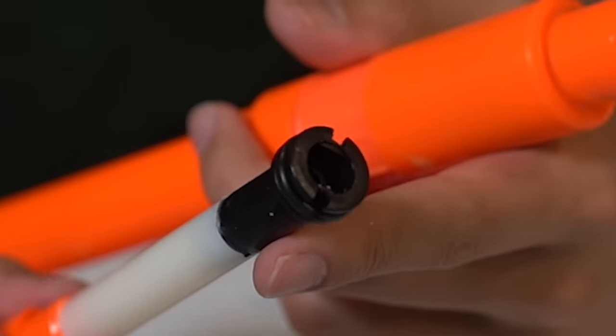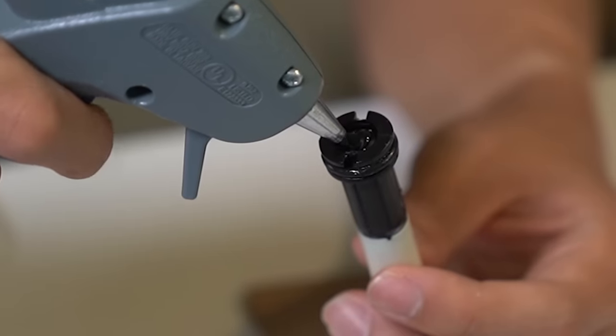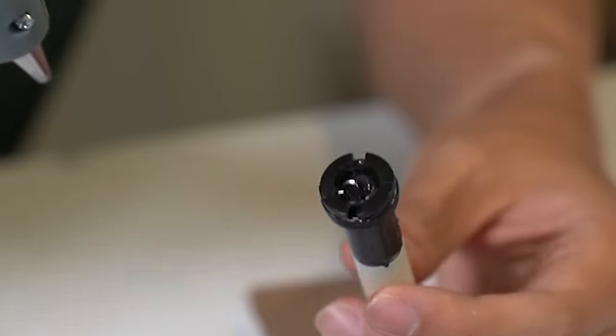It's simple enough to disable this though. All it took was a big bead of hot glue right on top of that valve. Now it can never open and we can put as much air into the tank as we want.